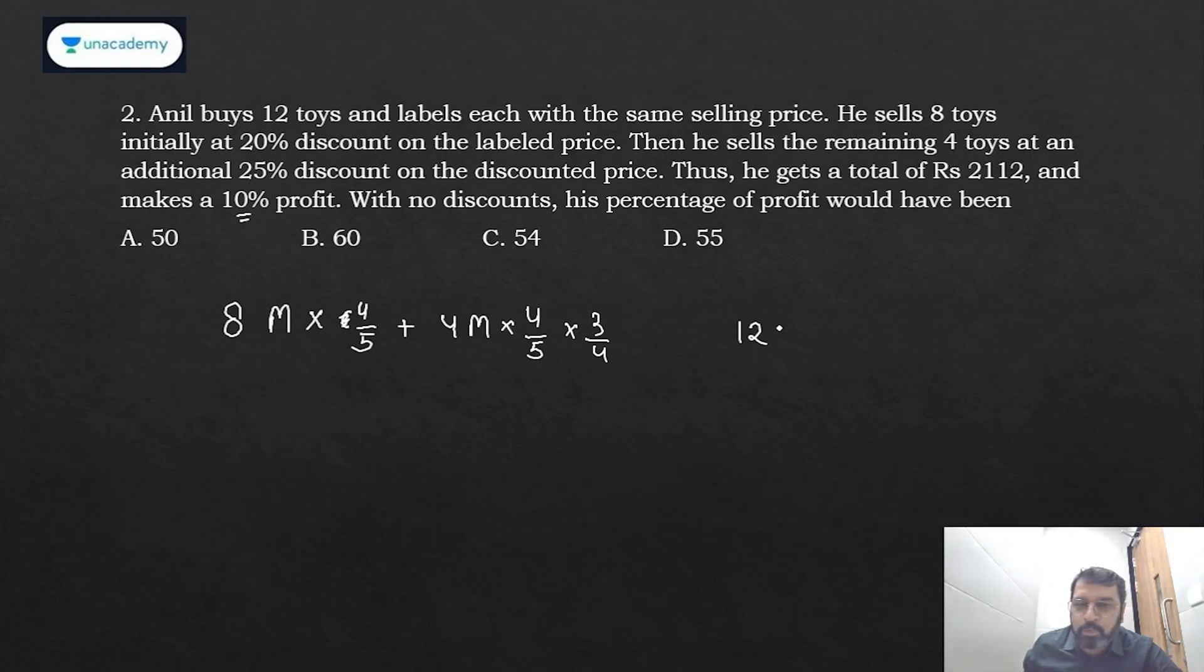Overall on 12 items I am getting 10% profit. So if I talk about overall, 12 items suppose their CP was CP, so selling price will be this × 1.1 or 11/10.